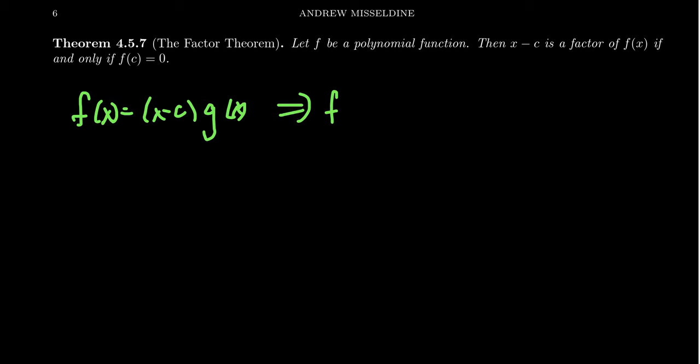then that would imply that f of c, which is equal to c minus c times g of c. What's g of c? I have no idea. But we're going to take 0 times g of c, which is definitely going to be 0. And so therefore, the function evaluated at c gives you 0. So x minus c being a factor implies that c is a root.